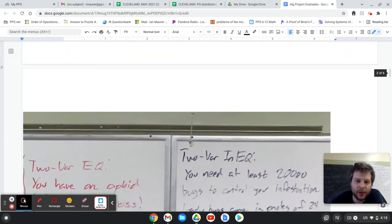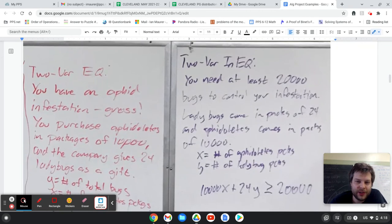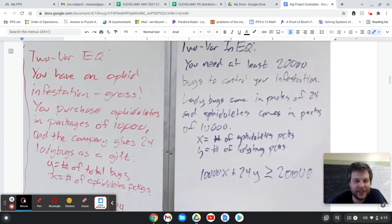Sliding on down for a couple more bug problems here. For my two variable equations and inequalities, I started writing about infestations. And so aphidoletes is a type of bug that attacks aphids and can help with aphid infestations.